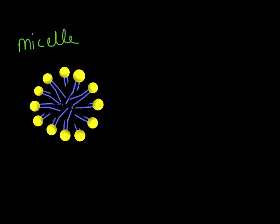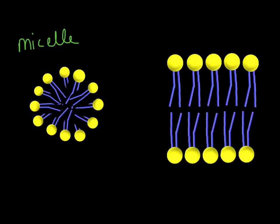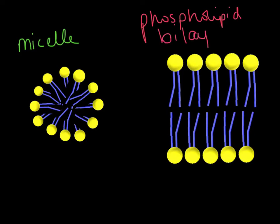Now if cells arranged themselves as micelles, there'd be no space in the middle for organelles, the nucleus, and everything else that happens in our cells. So what happens is phospholipids arrange themselves into a phospholipid bilayer — that's what makes up our cell membrane. 'Bi' tells us there are two layers of phospholipids. Both outside and inside the cell are watery environments, so the hydrophilic heads interact with those watery environments and the hydrophobic tails don't have to.